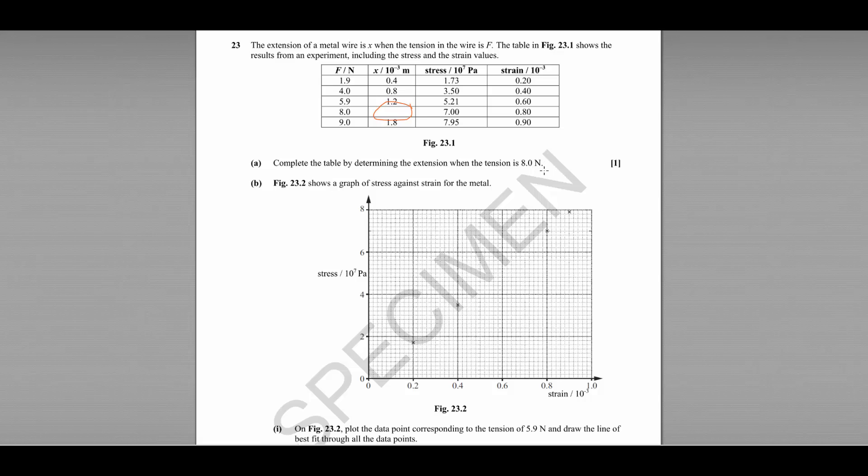Now to do this, we need to first work out what the initial length of the wire was, so that we can then use the strain to work out the extension. Because we know the equation strain is equal to extension divided by original length. So that gives us the original length is equal to the extension divided by the strain.